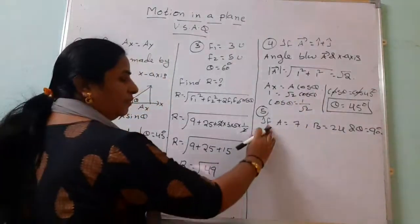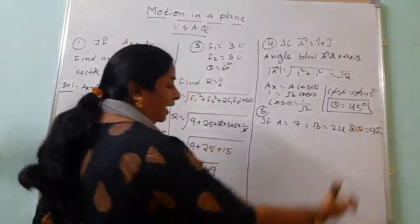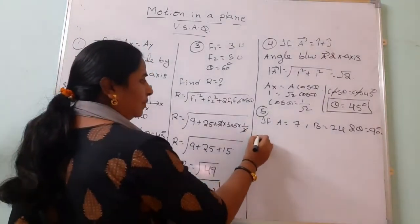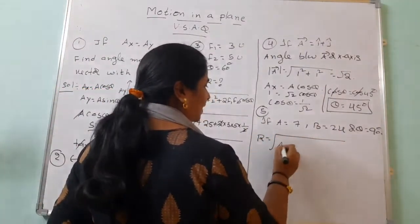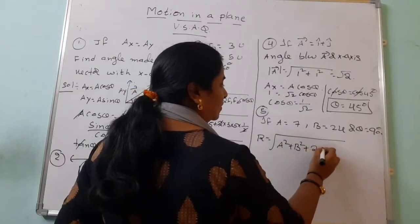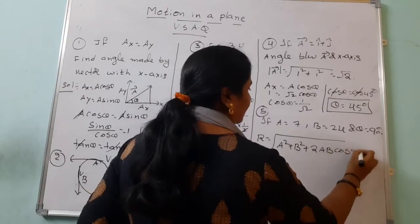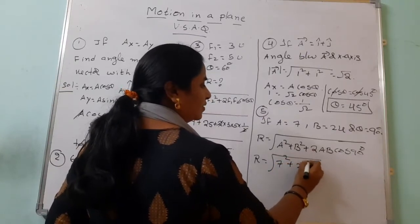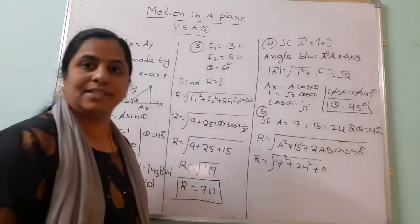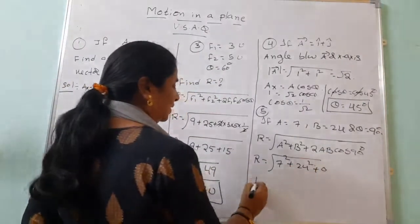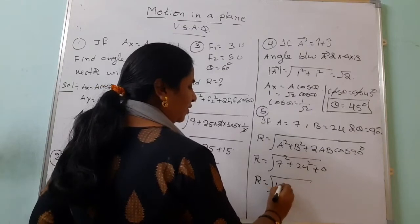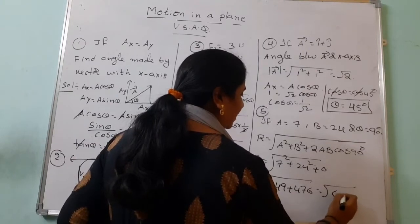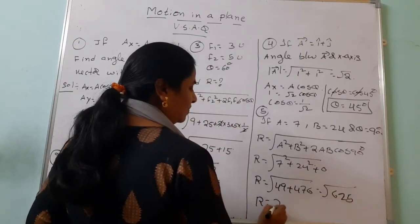The fifth question: A = 7 units, B = 24 units, and the angle between them is 90 degrees. Using the parallelogram law: R = √(A² + B² + 2AB cos 90°). Since cos 90° = 0, R = √(49 + 576) = √625 = 25 units.